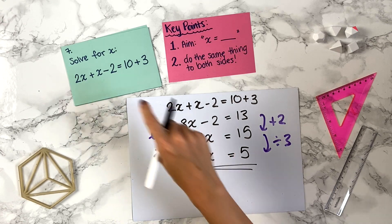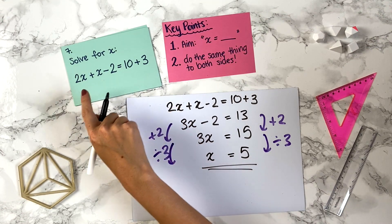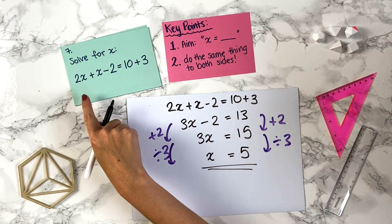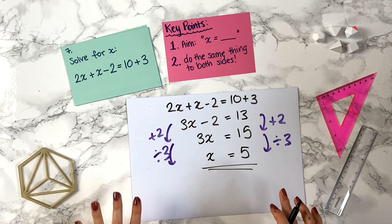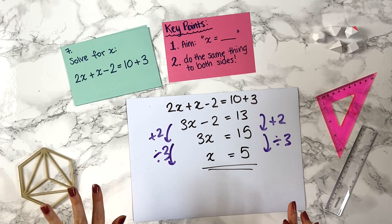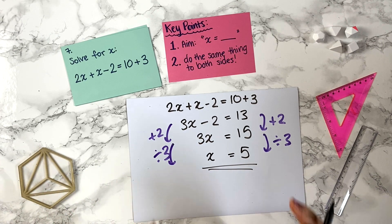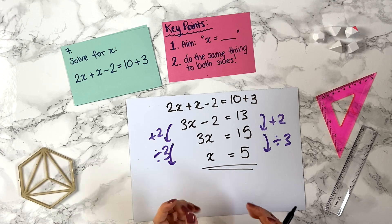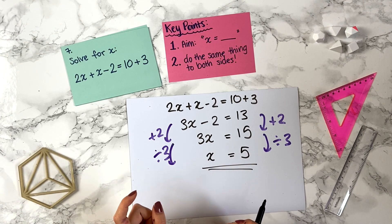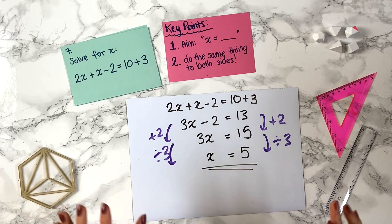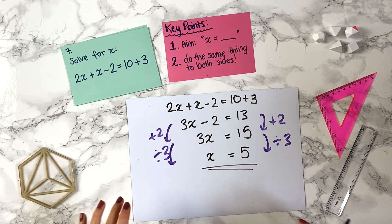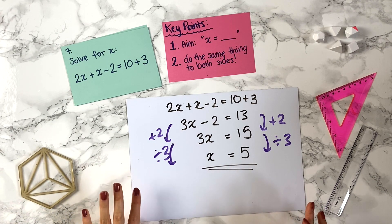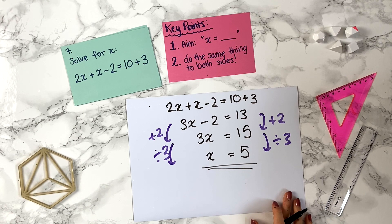You can substitute x equals 5 back in and you'll see both sides equal 13, confirming the answer. Remember: get x's on one side, numbers on the other, end up with just x equals something. It's crucial that every time you do a step, you do it to both sides — if you do that, you can't go too far wrong. And always remember you can check your answer.